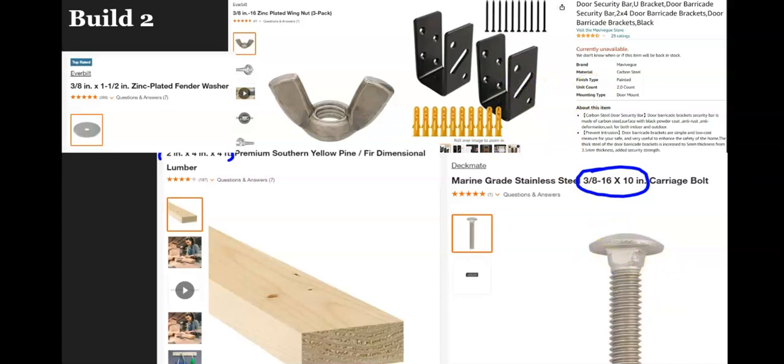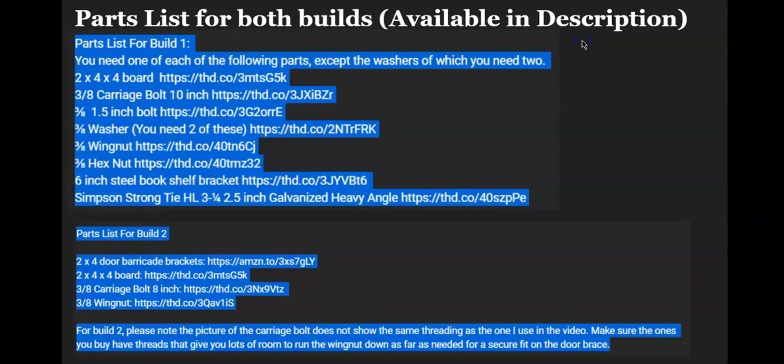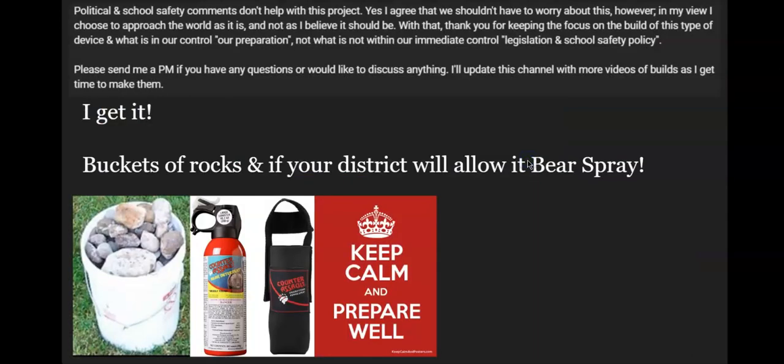What you need for this one: you need one of these three-eighths washers, a three-eighths wing nut, some of these two-by-four door barricade brackets from Amazon—you're only going to need one for the device—one two-by-four-by-four board, and one 10-inch three-eighths carriage bolt. Again, some really badly drawn schematics. If some of you guys with some good art skills hook me up, I will remake this video and put those schematics in there. These are the parts. I'll put these in the description: the parts for build one and build two.